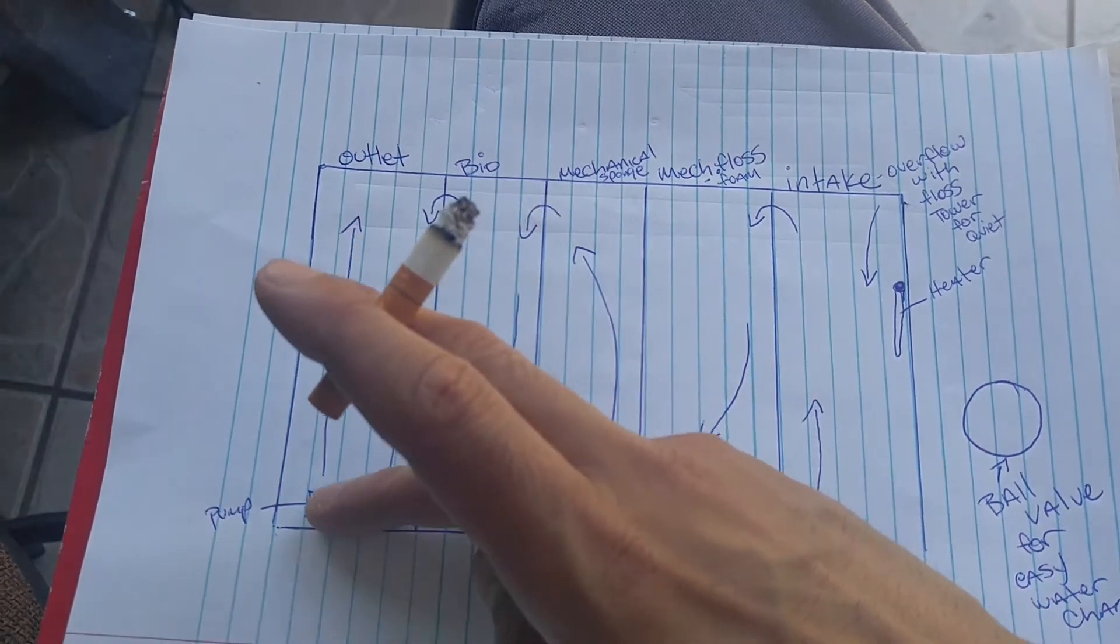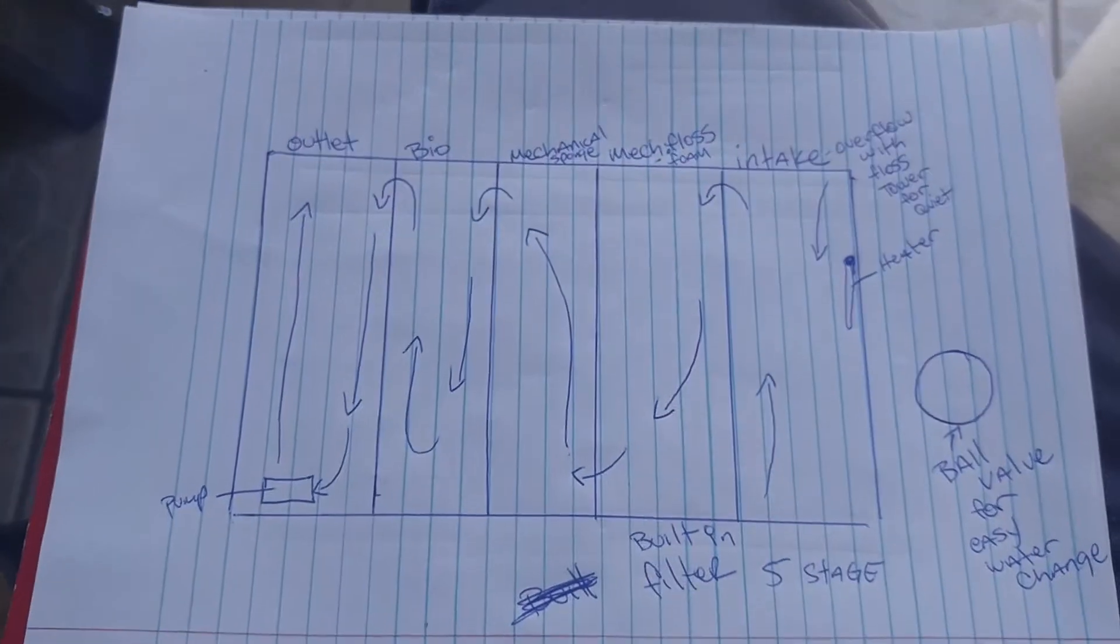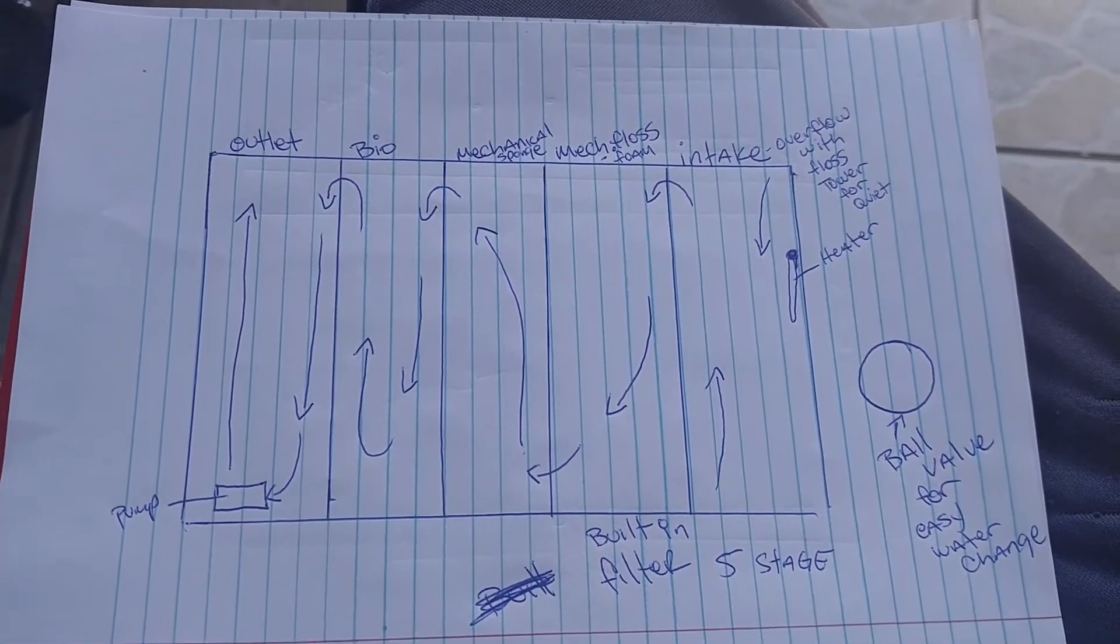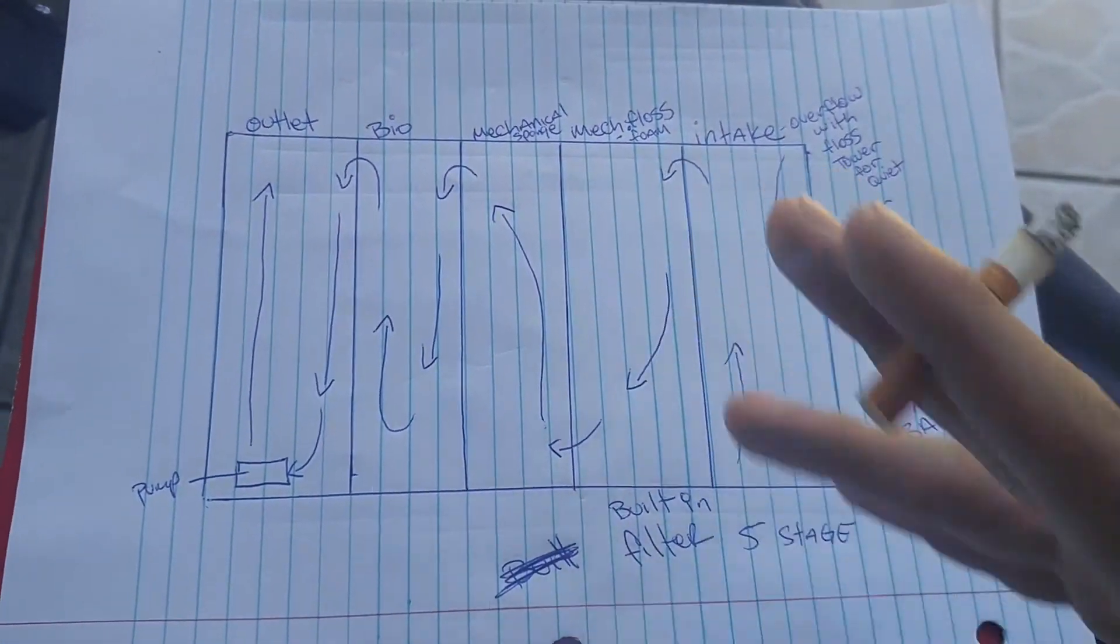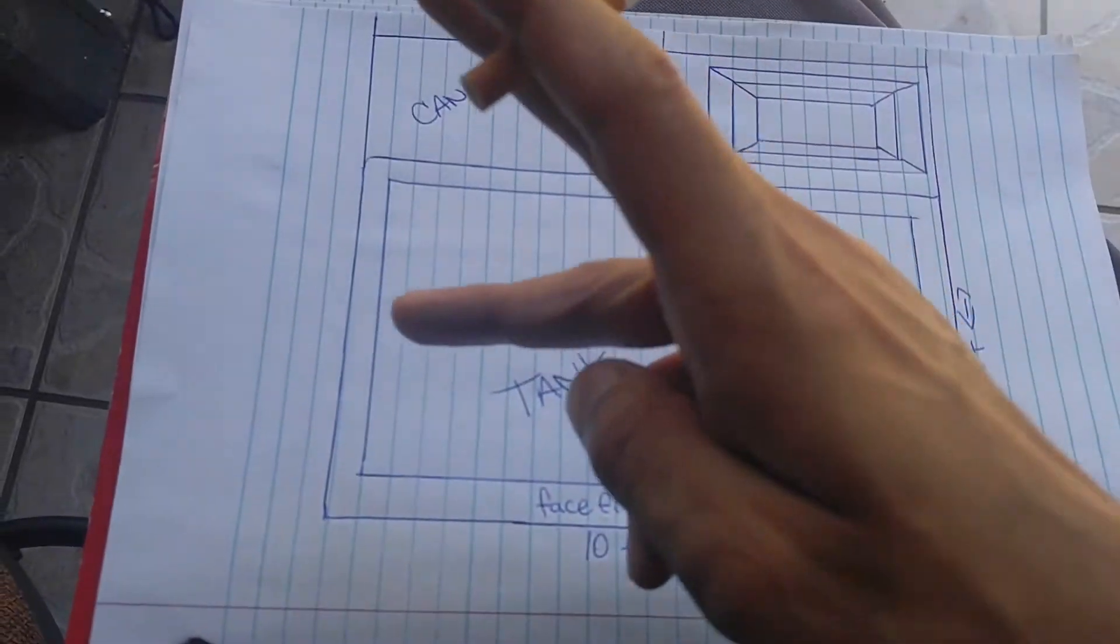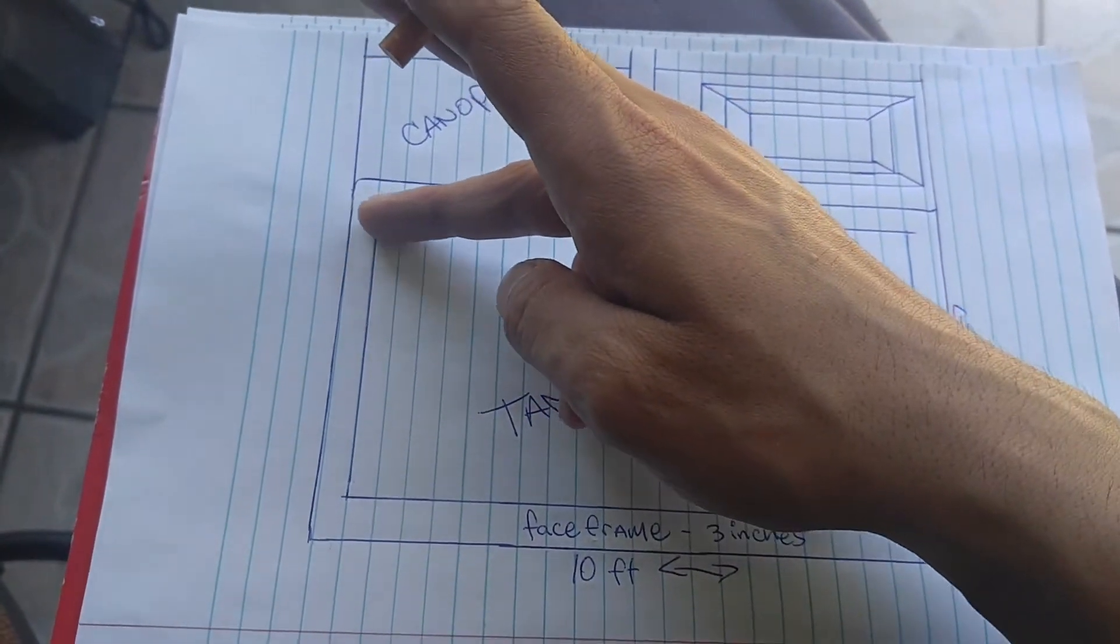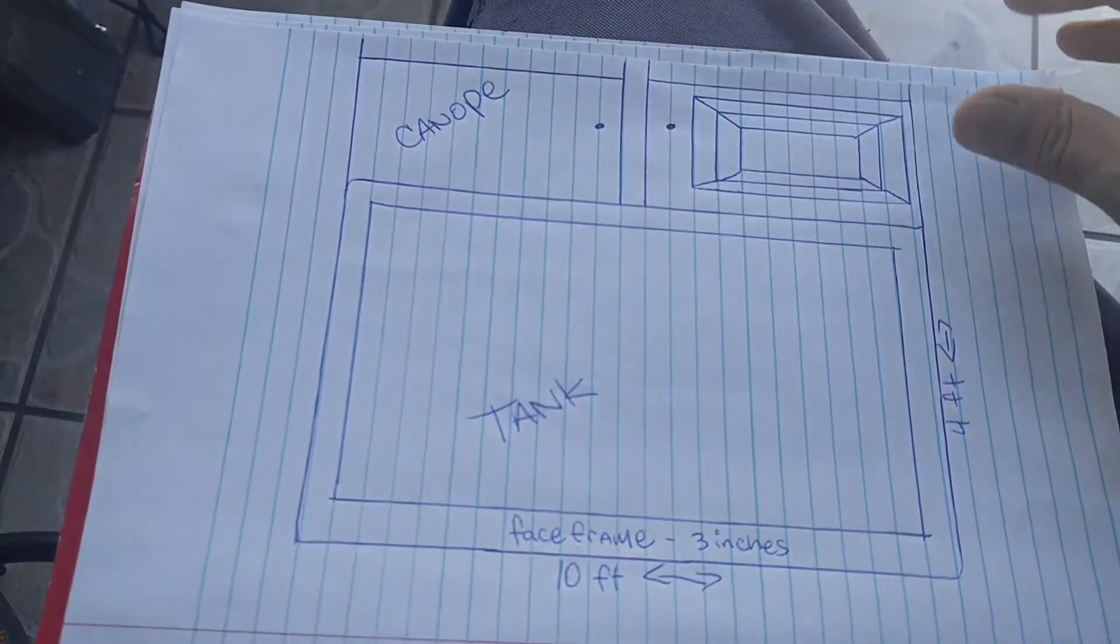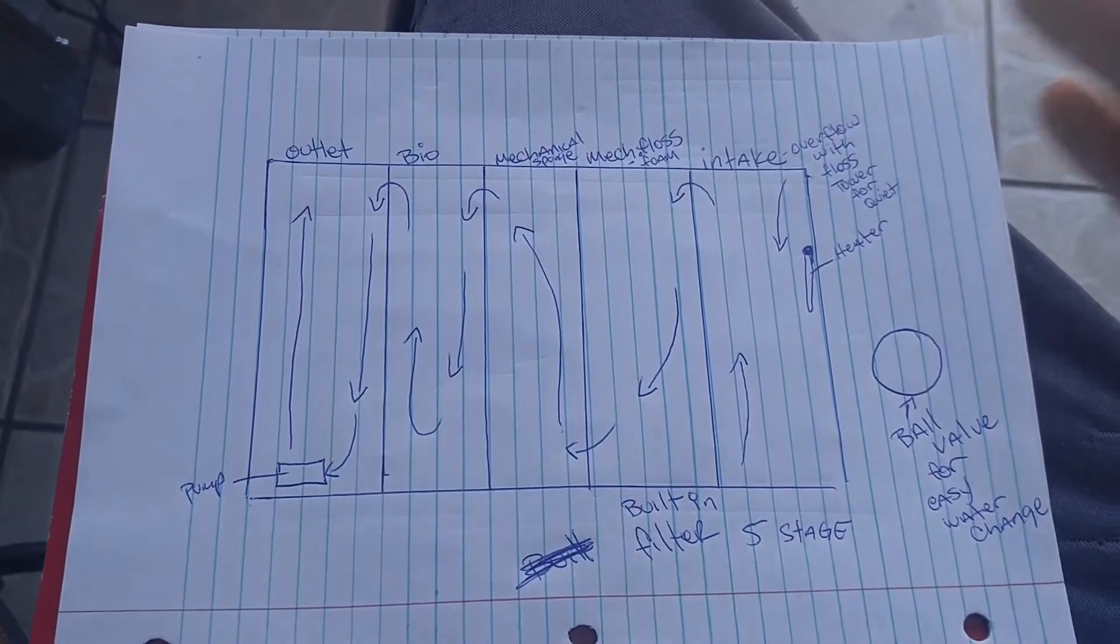It's gonna go down into the pump and then it's gonna return back to the tank. So that's my idea for my five-stage built-in filter. This is going to be two feet and it's gonna hide behind one of these. You're not even gonna see it. The only way you're gonna see it is by the gooseneck returns. That's the only way you're gonna notice a filter there.